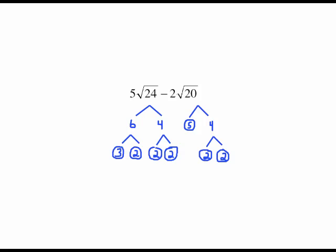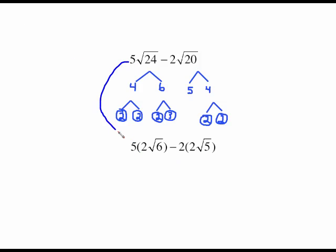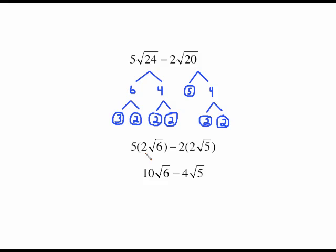So let's now write things as radicals. Here's our 5 coefficient. I have a pair of 2s and that's why that 2 is there. I have a leftover 2 times 3. That's where the 6 comes in. Here's my coefficient of 2. I have a pair of 2s. So a 2 comes out and the leftover 5. I can multiply the 5 times the 2 and the 2 times the 2 which gives me 10 times the square root of 6 minus 4 times the square root of 5 and they are not like terms. That's it.